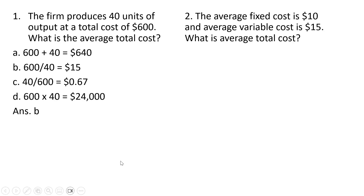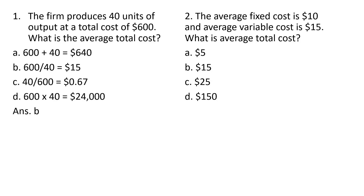Question two. The average fixed cost is $10 and average variable cost is $15. What is average total cost? Average total cost equals average fixed cost plus average variable cost, so the answer is 10 plus 15, or $25. Answer C.